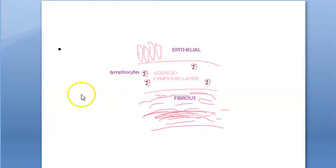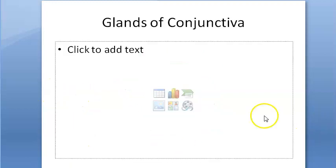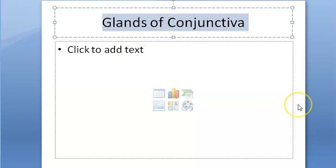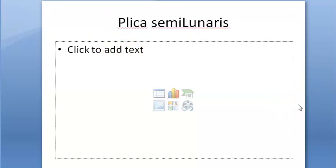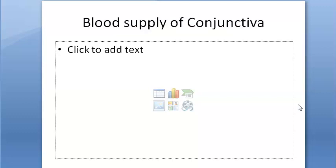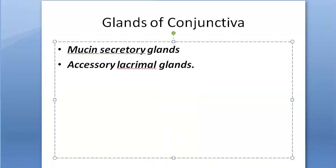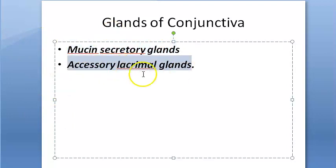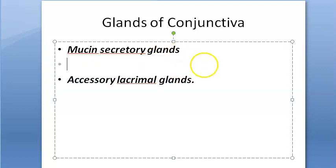Now we move to the new topic: glands of conjunctiva, followed by plica semilunaris, caruncle, blood supply, and nerve supply of conjunctiva. The conjunctiva has so many glands — there are two main categories: mucin secretory glands and accessory lacrimal glands.